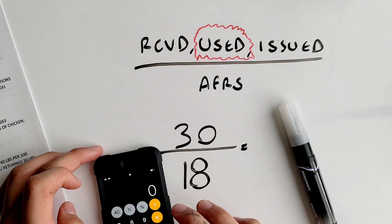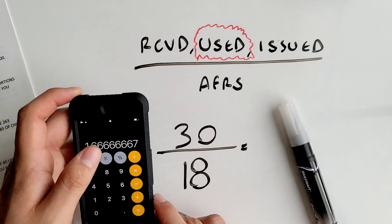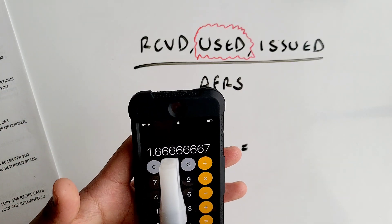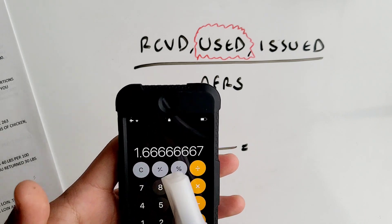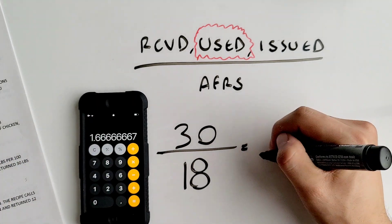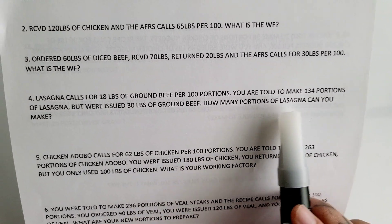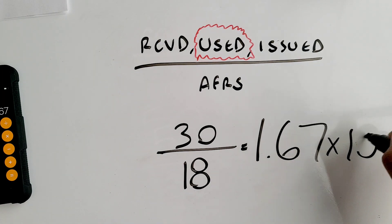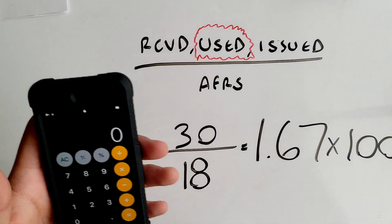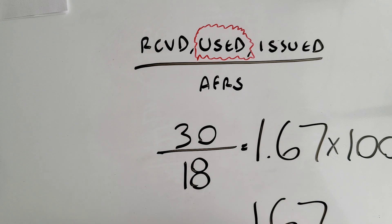30 divided by 18 equals 1.6666. Like the previous problem, we round to the hundredths place — since the third digit is 6 (five or above), we round up to 1.67. That is your working factor, but that's not what the question is asking. It's asking how many portions you can make, so multiply the working factor by 100: 1.67 times 100 equals 167. That is your final answer.